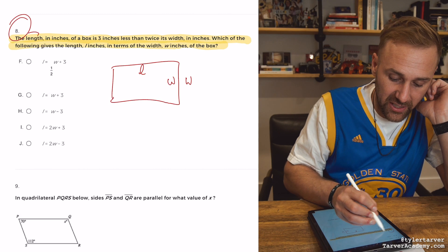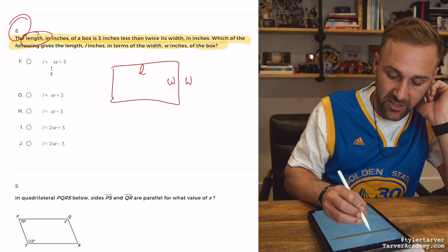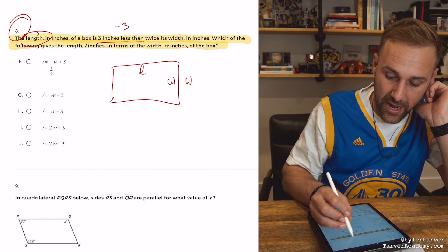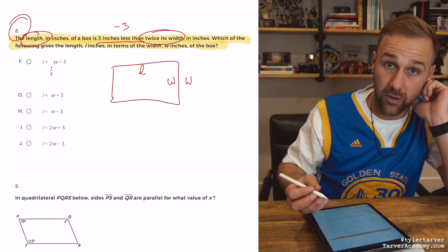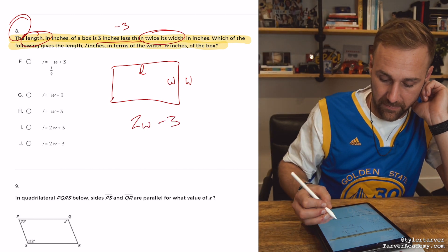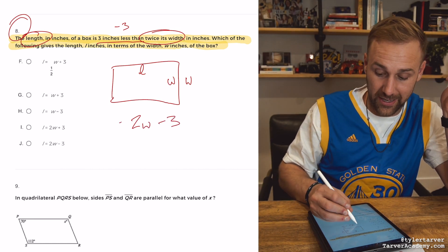So let's look back at the problem. The length in inches of a box is three inches less than, so that's going to be a minus three, twice the width. So, twice is times two. So, 2W minus 3. Is that going to equal the length?